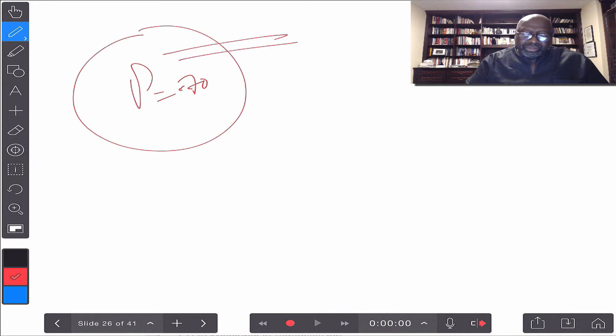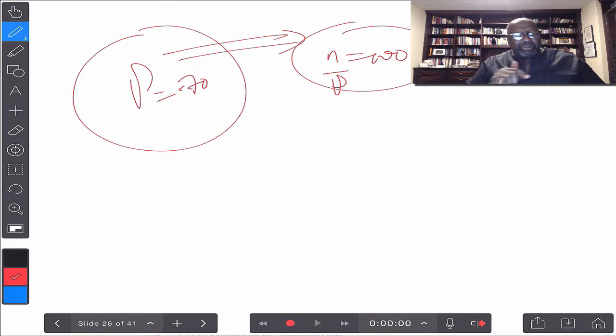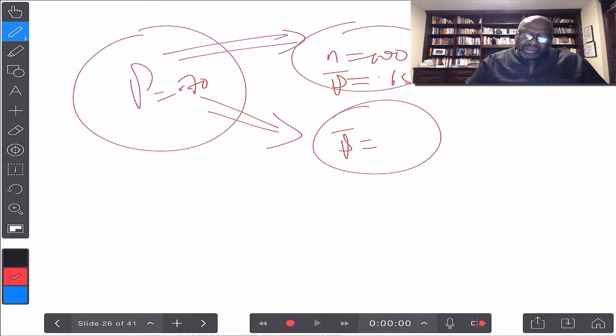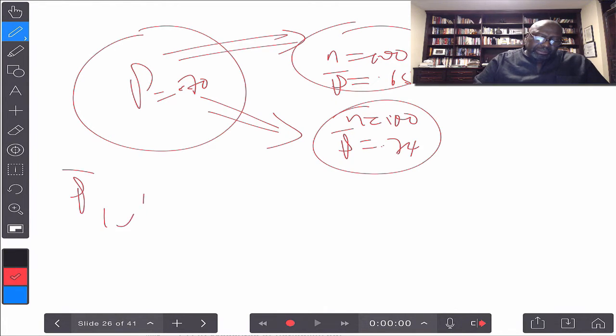If I took a random sample of N, let's say 100 students, and I asked them, I'm going to denote my sample proportion as P bar. Maybe in that sample, I got 65%. If I took another sample, P bar might be 74%. N is 100. If I keep repeating that, I will have P bar 1, P bar 2, P bar 3, P bar M.